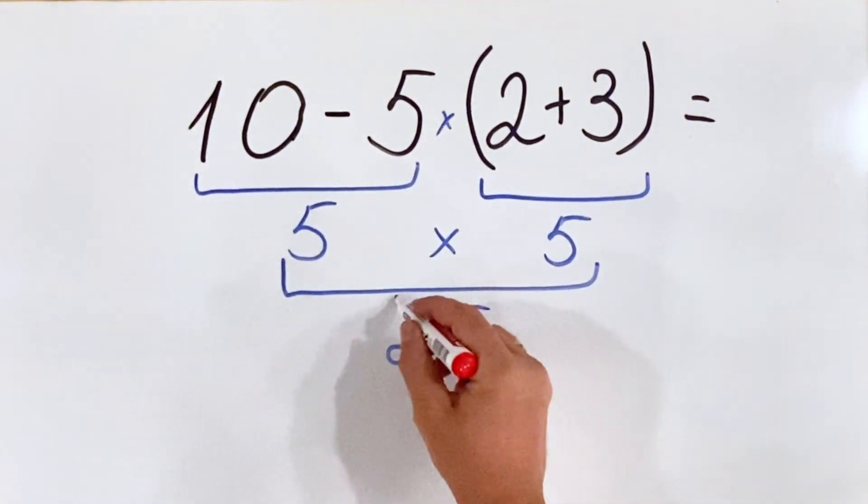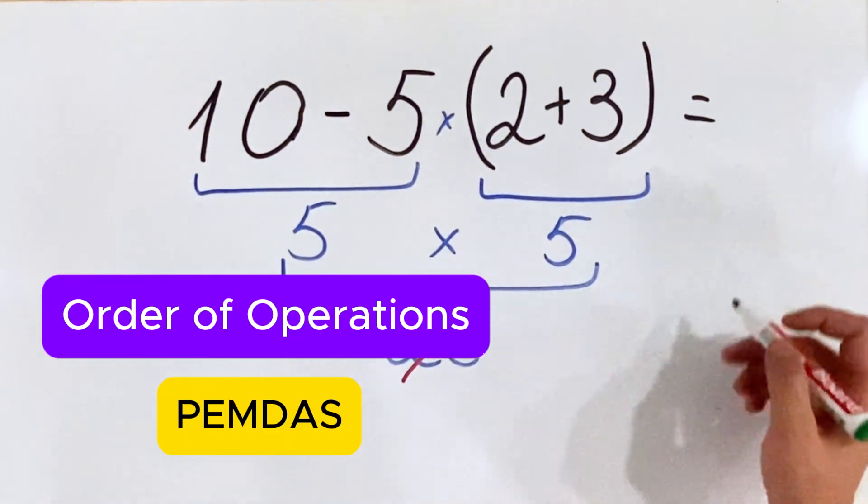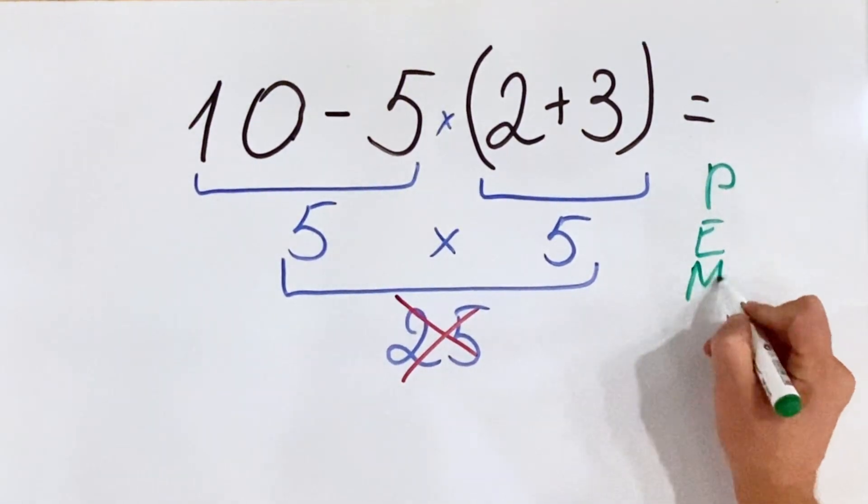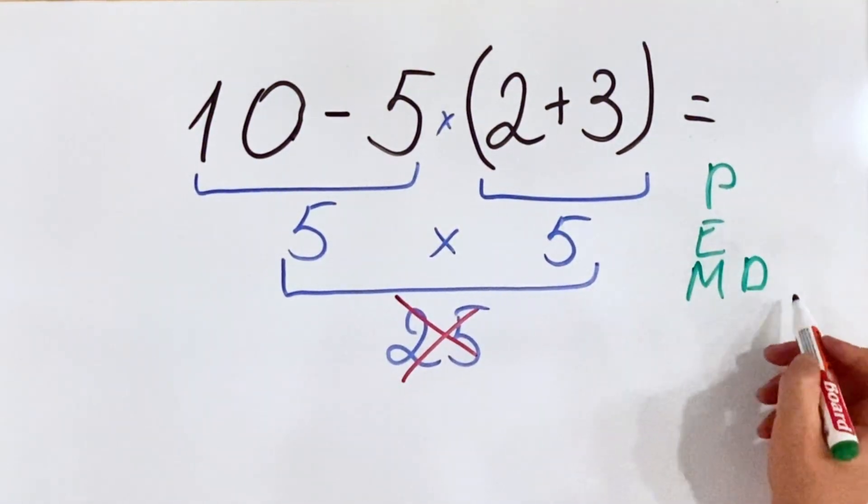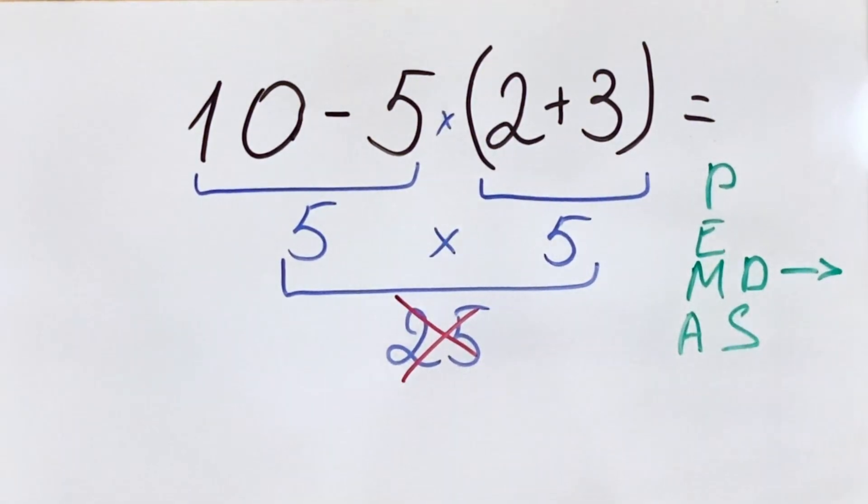But this answer is not correct. According to the order of operations, which is PEMDAS: P stands for parenthesis, E for exponents, M stands for multiplication and D for division and needs to be done from left to right, A for addition and S for subtraction.